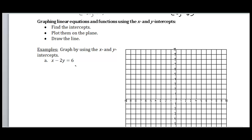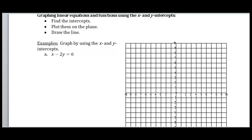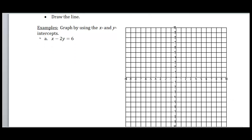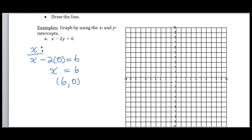To find the x-intercept, I replace y with zero. Two times zero is zero, so I get x equals six. As an ordered pair, that's the point (6, 0) — my x-coordinate is six, my y-coordinate is zero. To find our y-intercept, we let x be zero, so I get zero minus 2y equals six, which gives negative 2y equals six.